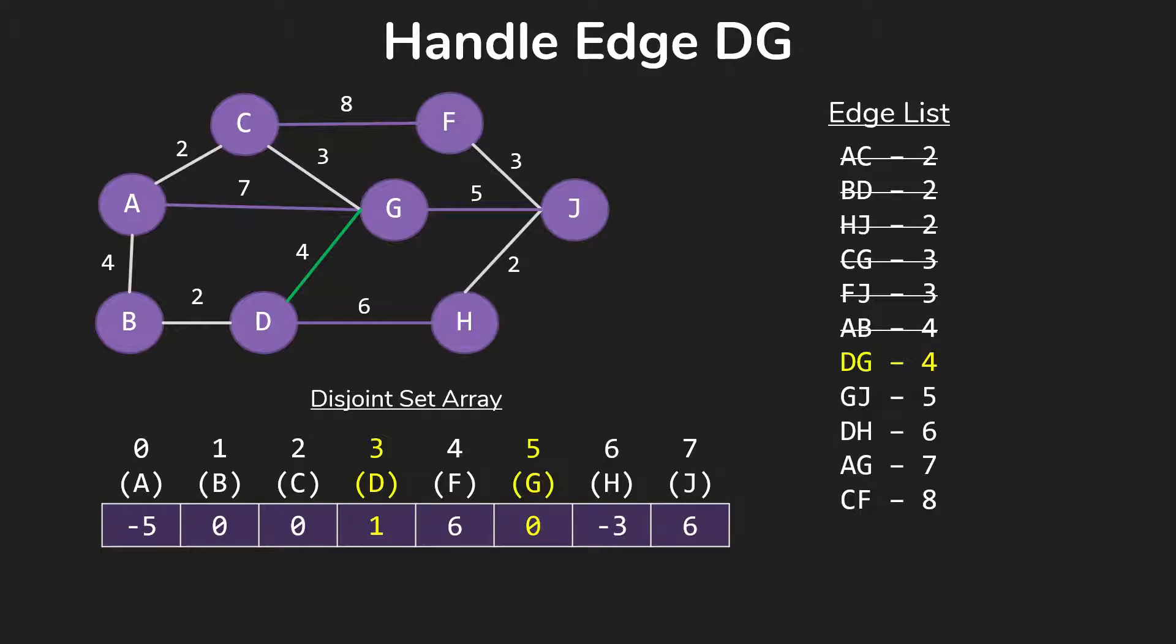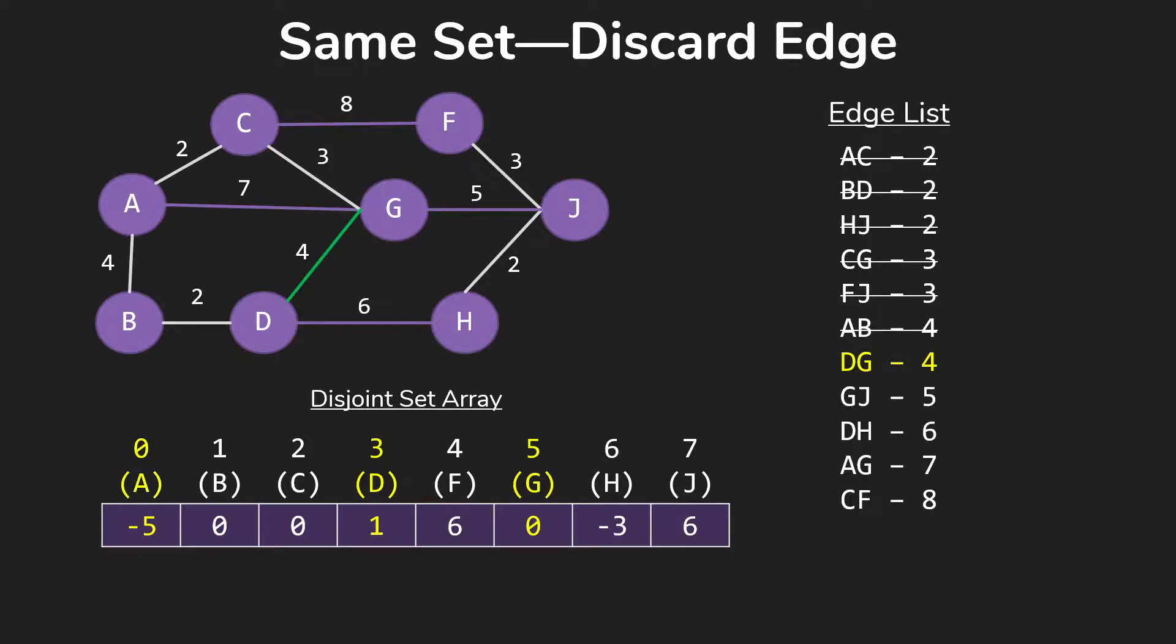So when we look at DG, D is in set 0, G is also in set 0. So we see they're in the same set. That means we're simply going to discard that edge and ignore it. Then we would move on, look at edge GJ, add it to our minimum spanning tree, and be done.